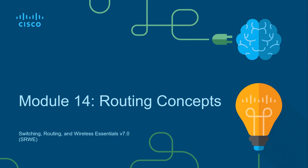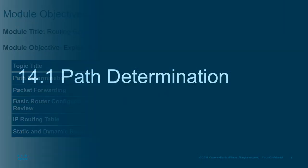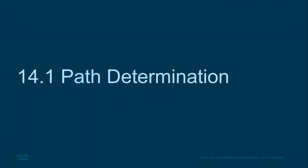What are we going to be covering in this module? We're going to be looking at path determination — how routers actually route. We're going to review a basic configuration of a router, examine an IP routing table, and look at static and dynamic routing protocols. Let's jump into path determination.